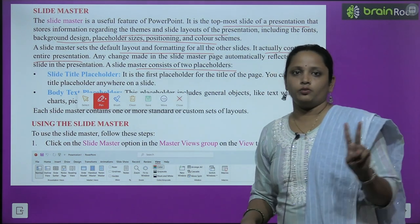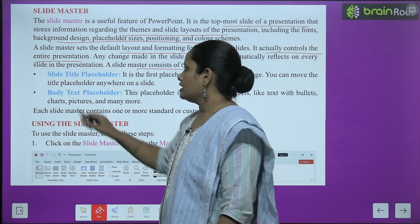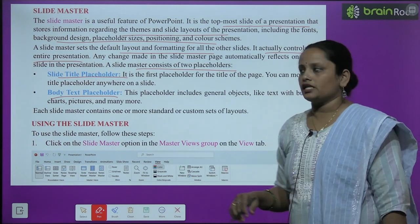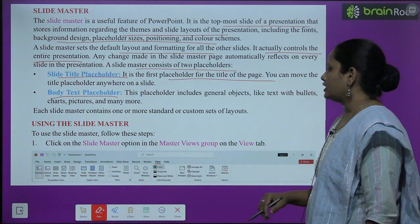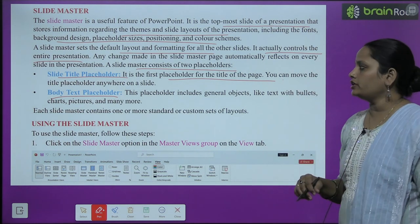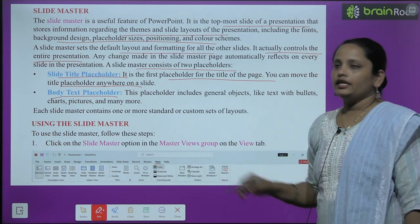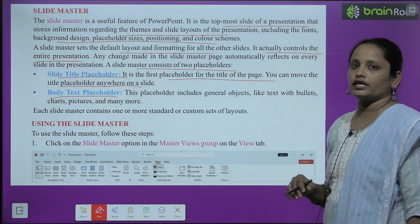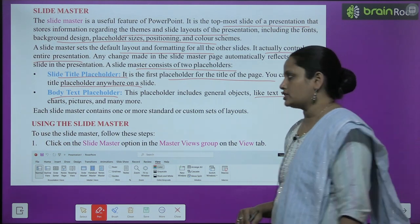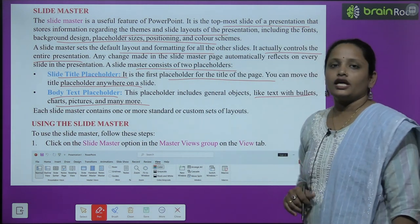A Slide Master consists of two placeholders. Slide master mein aapko do placeholders dikhaayi denge — pahla aata hai slide title placeholder, aur doosra aata hai body text placeholder. Slide title placeholder is the first placeholder for the title of the page — page ka title likhne ke liye yeh jagah bani hoti hai. You can move the title placeholder anywhere on the slide. Body text placeholder includes general objects — jusmein text with bullets, charts, pictures, aur bhi bohot saari cheezen aapko body text placeholder mein milengi.